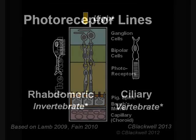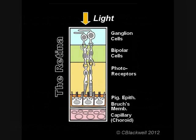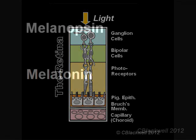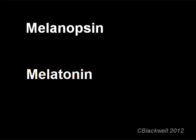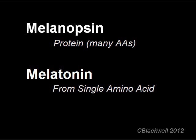The discovery of melanopsin in a place where it wasn't expected gives us an important clue about how the retina likely arrived at its current structure. Before we start, you should know that melanopsin is not the same as the similar-sounding melatonin. While both are involved in setting circadian rhythms, they are structurally different and found in different places. Melanopsin is a protein consisting of many amino acids, while melatonin is a derivative of the single amino acid tryptophan. The first is found in the retina, while the latter is found in the pineal gland.